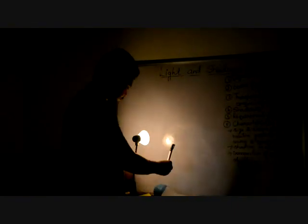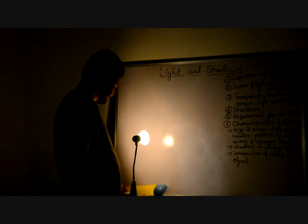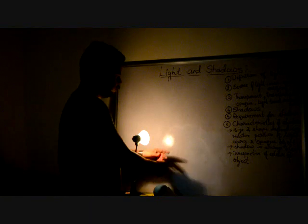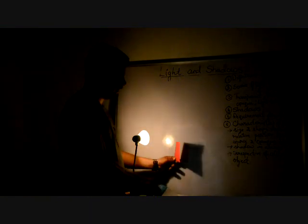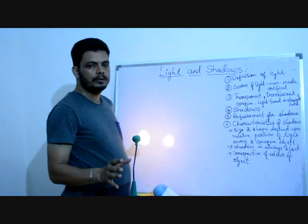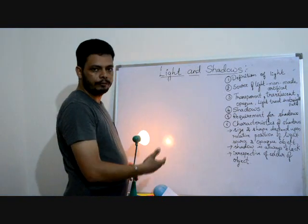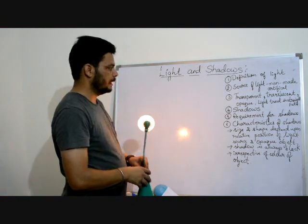The second characteristic is that shadows are always black in color. If I take a blue object, the shadow is black. A yellow object — shadow is again black. A maroon opaque object — shadow is again black. So shadows are always black in color, irrespective of the color of the opaque object.